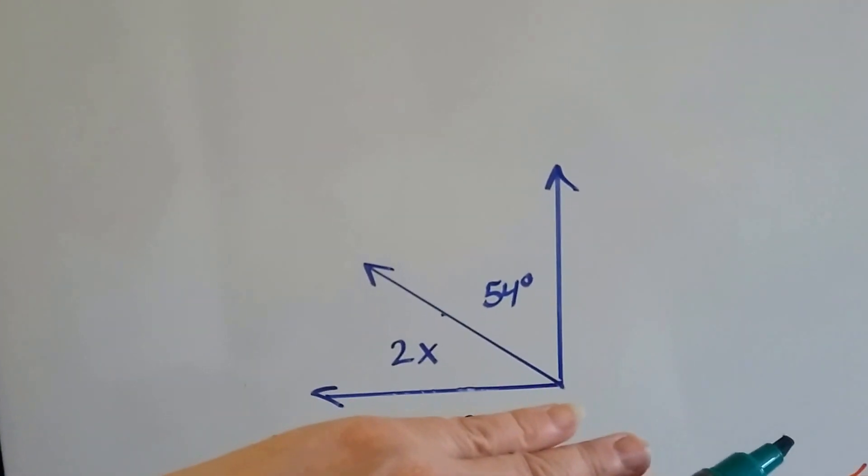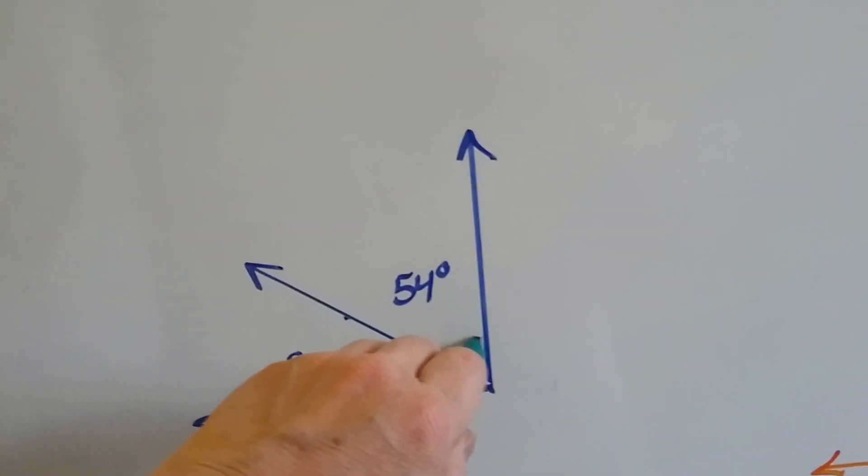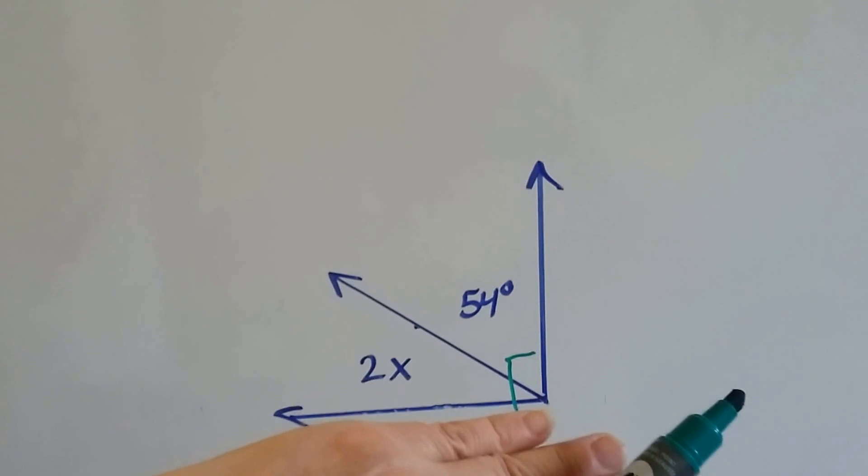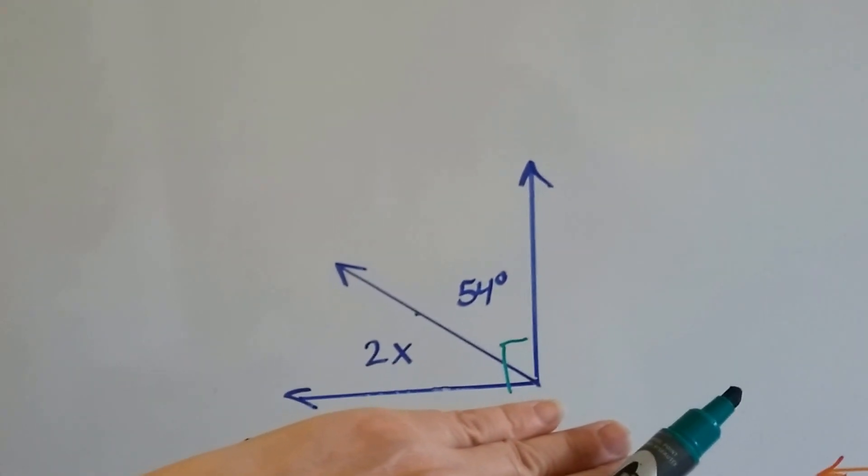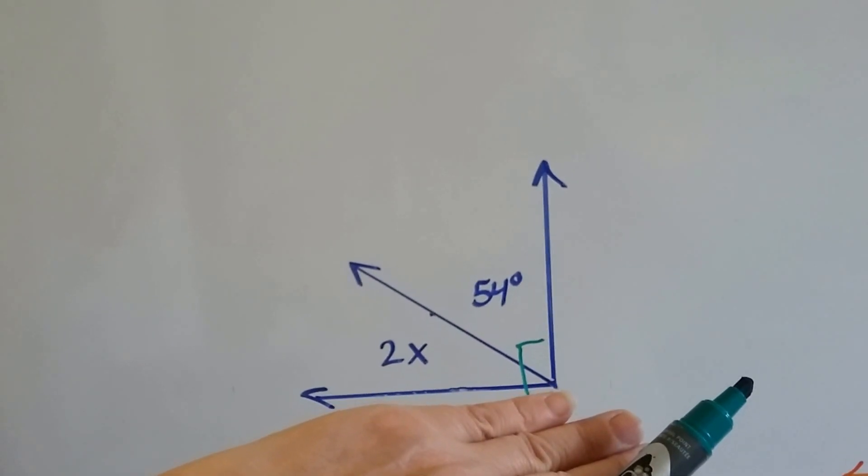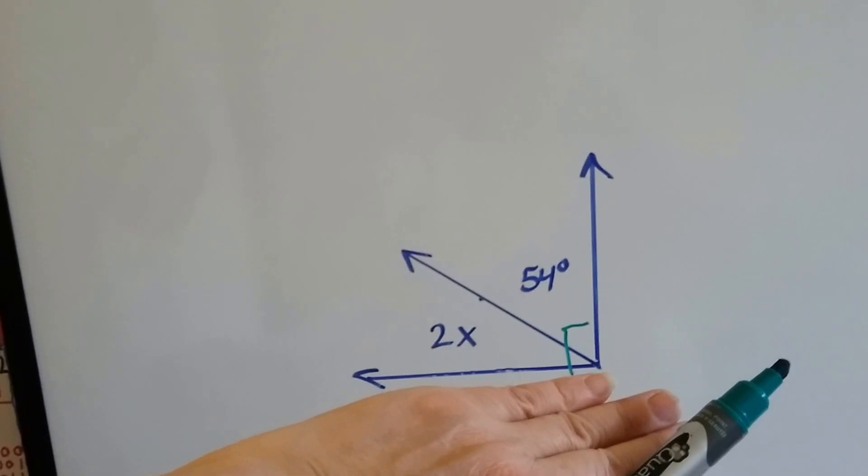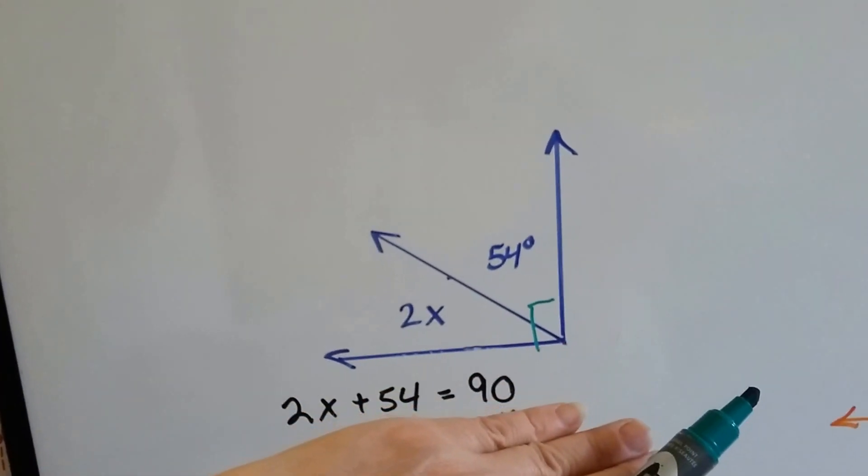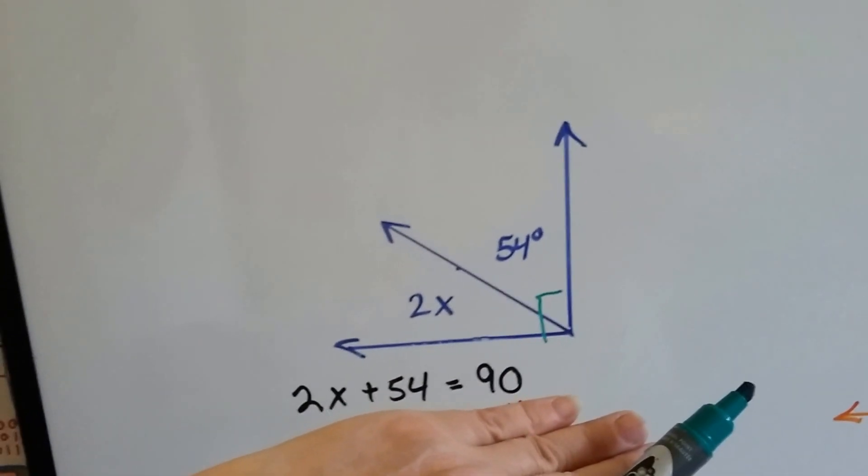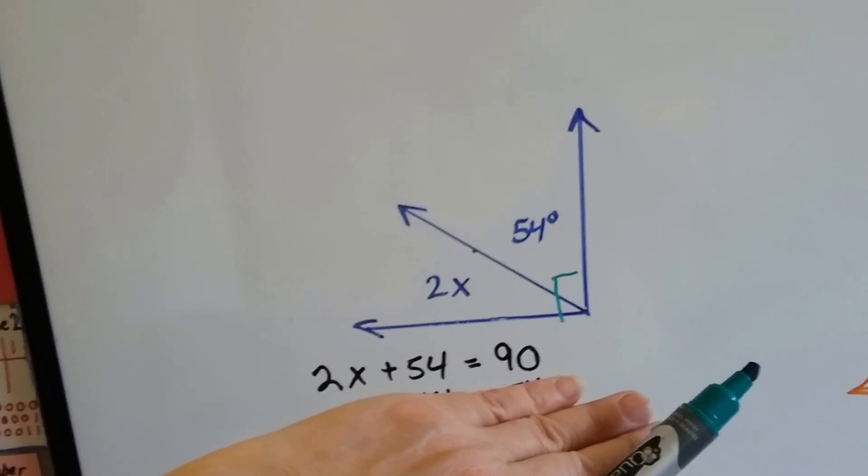We're given this. Now we know it's a 90 degree angle, especially if it's got the little box here. And we're given that one of the angles is 54 degrees and the other one is 2x. Well, we know a 90 degree angle is 90 degrees, right? So what we do is we write an equation as an inequality. 2x plus 54 must equal 90, right?